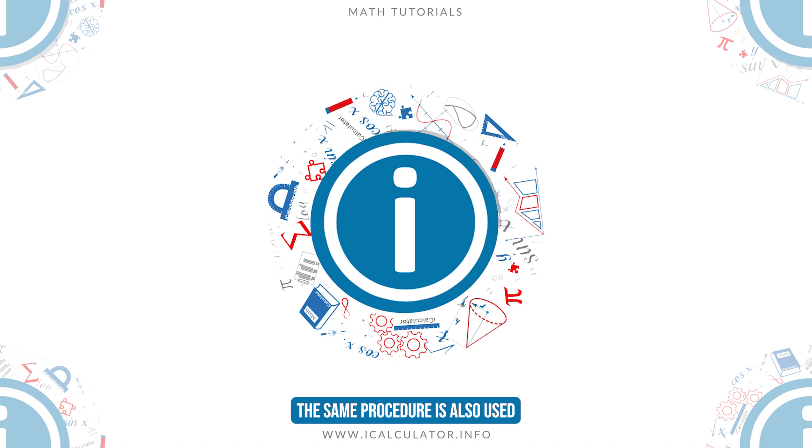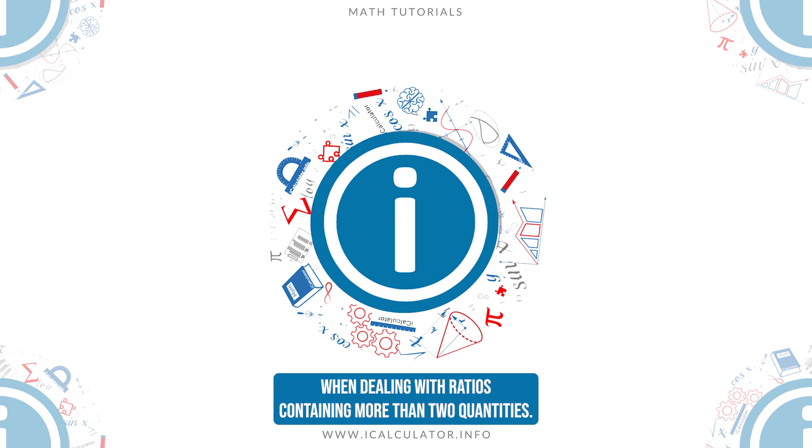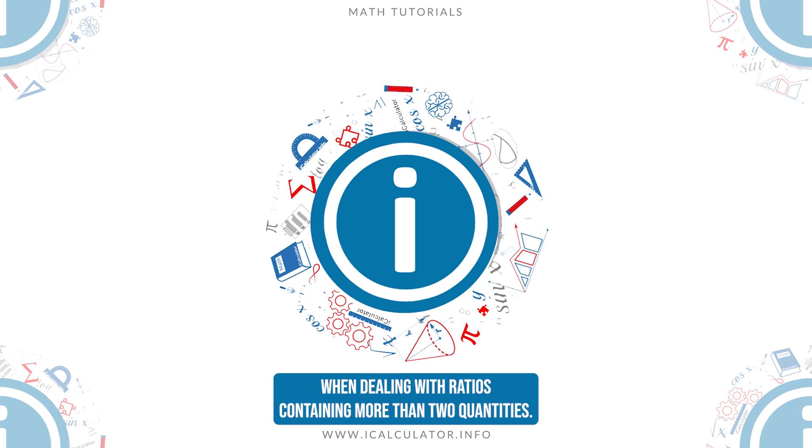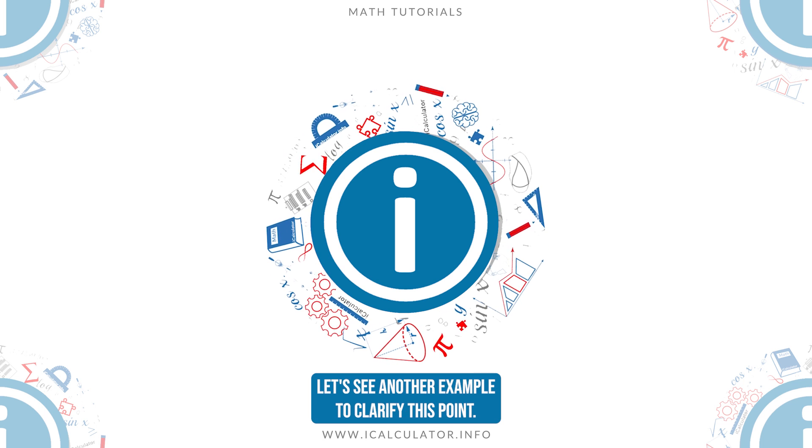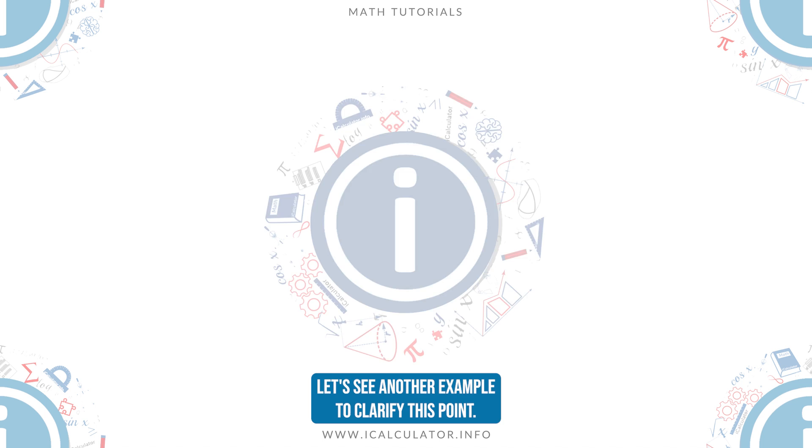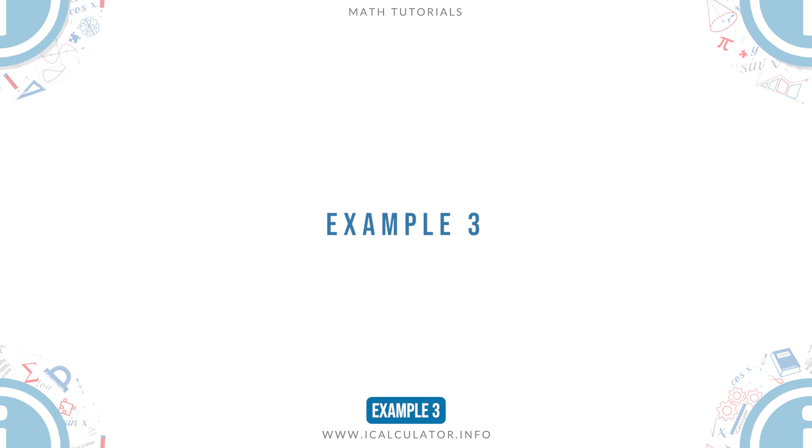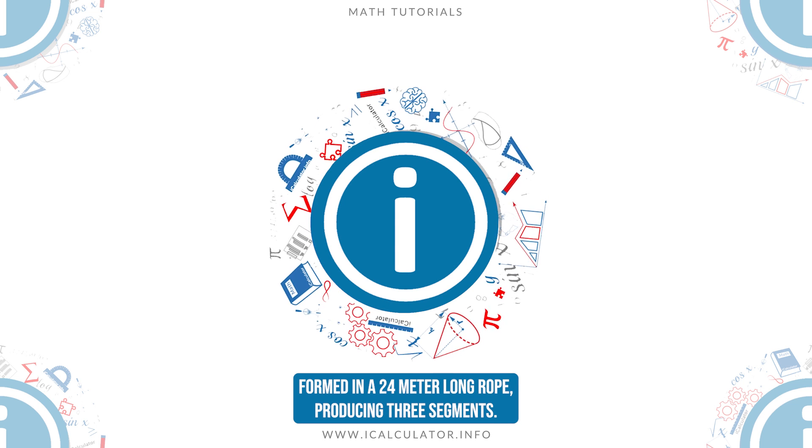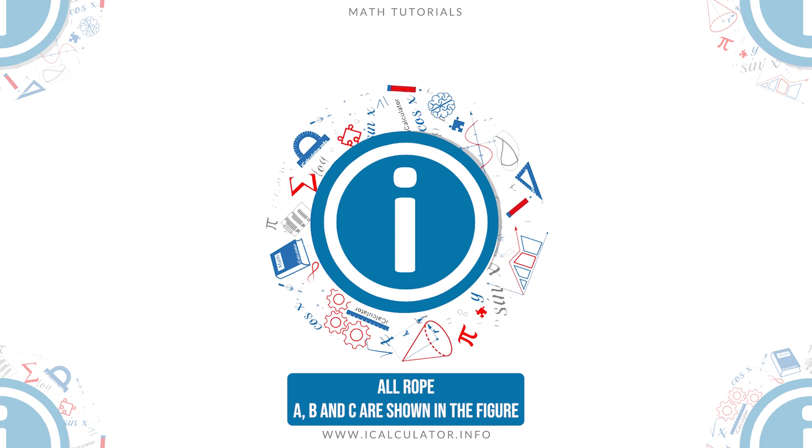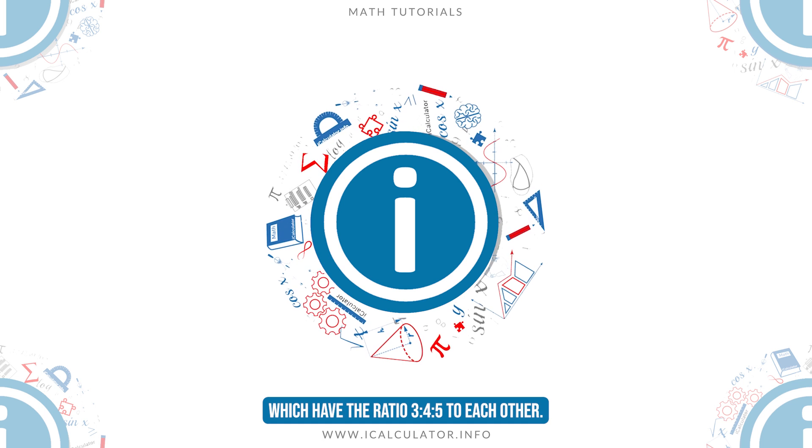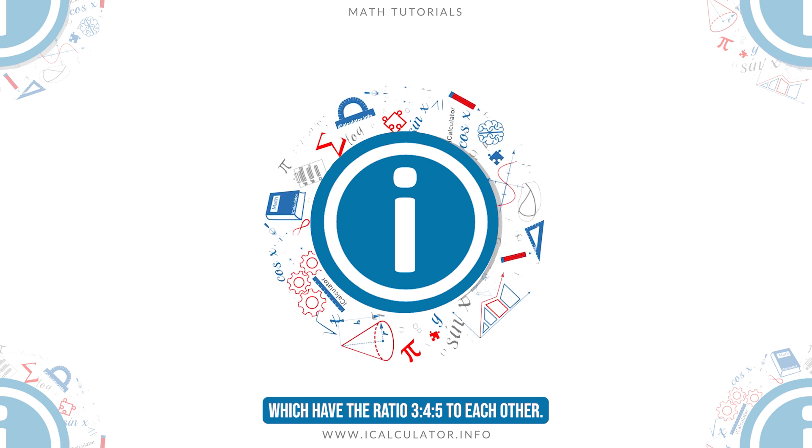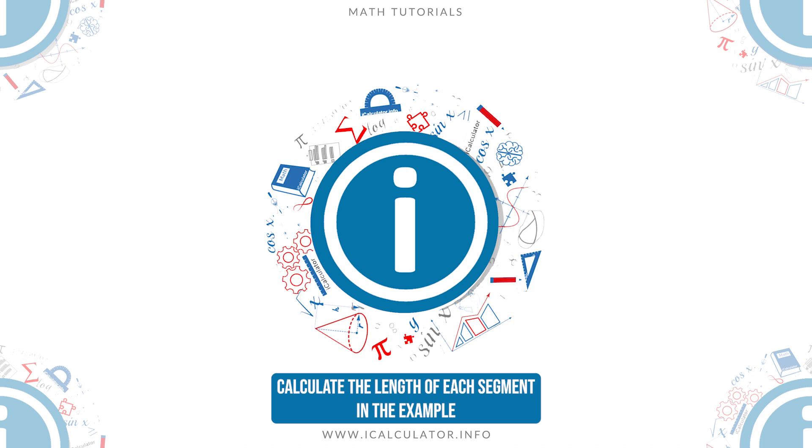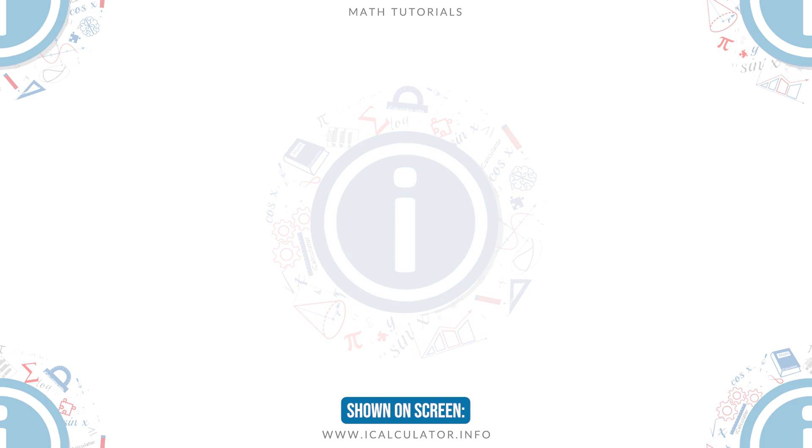The same procedure is also used when dealing with ratios containing more than two quantities. Let's see another example to clarify this point. Example 3. Two knots are formed in a 24-meter-long rope producing three segments or rope A, B, and C, as shown in the figure, which have the ratio 3 to 4 to 5 to each other. Calculate the length of each segment in the example shown on screen.